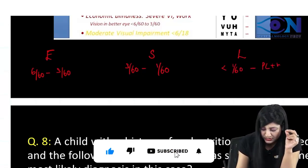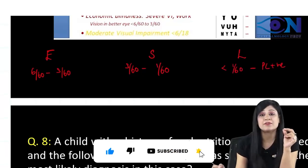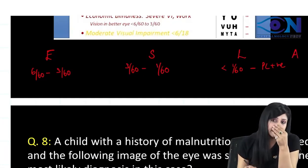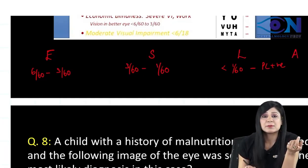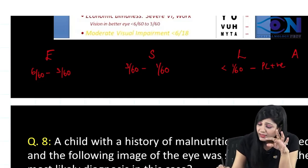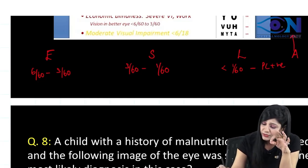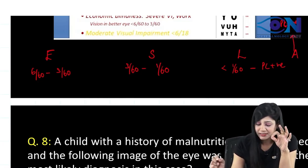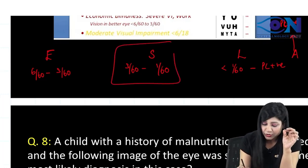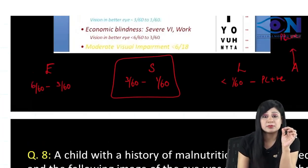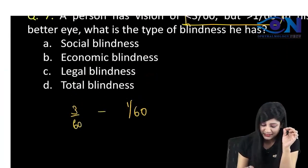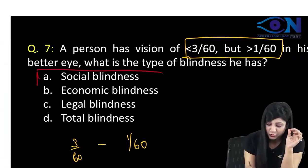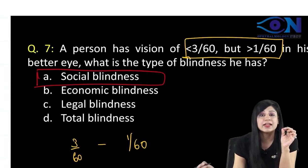It can go up to PL positive, while 'A' — absolute — means PL negative. So what they have asked is vision from 3 by 60 to 1 by 60, and the answer will be social blindness.